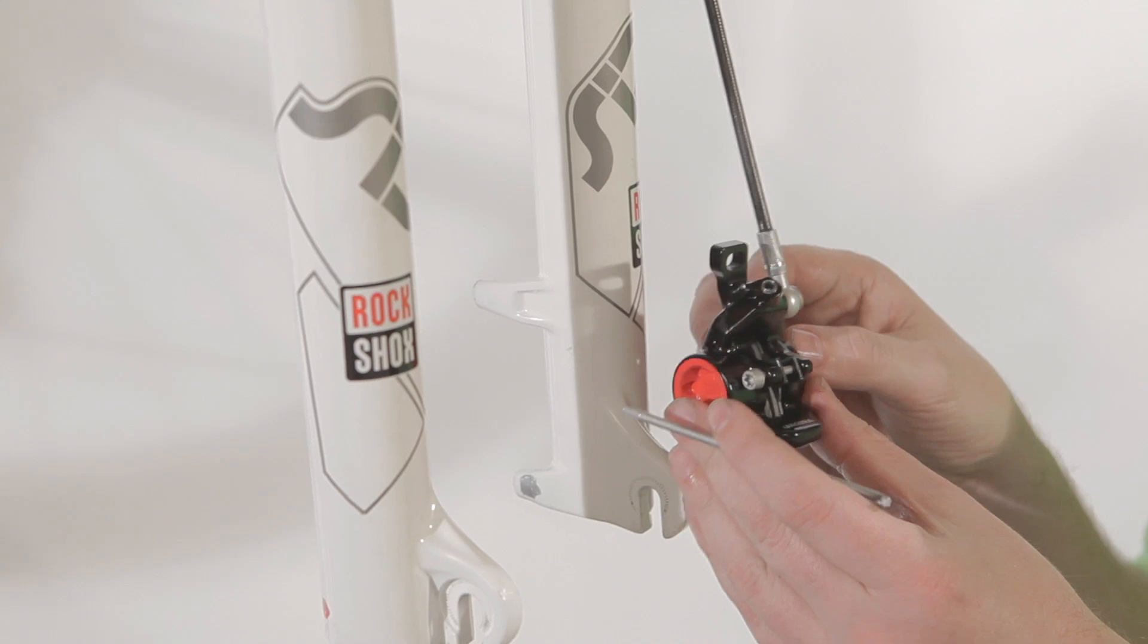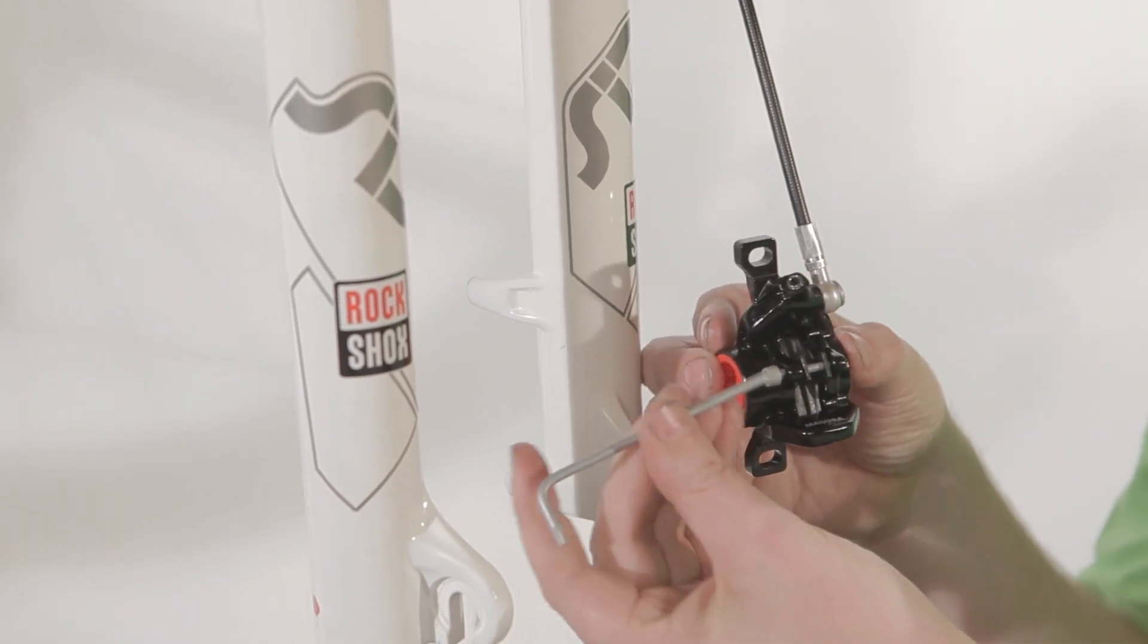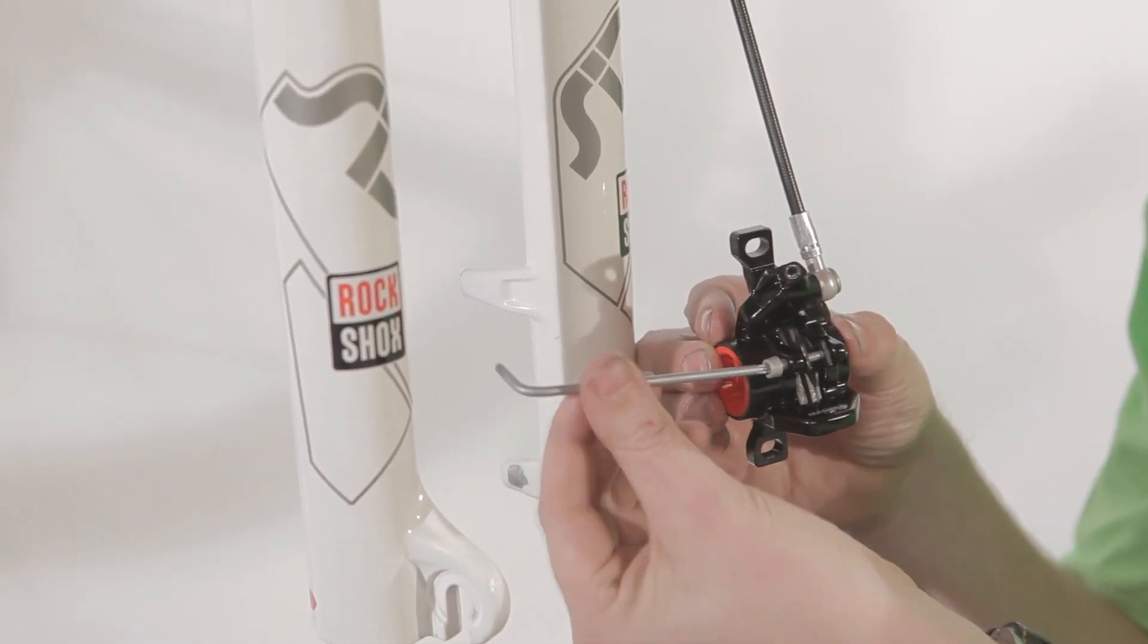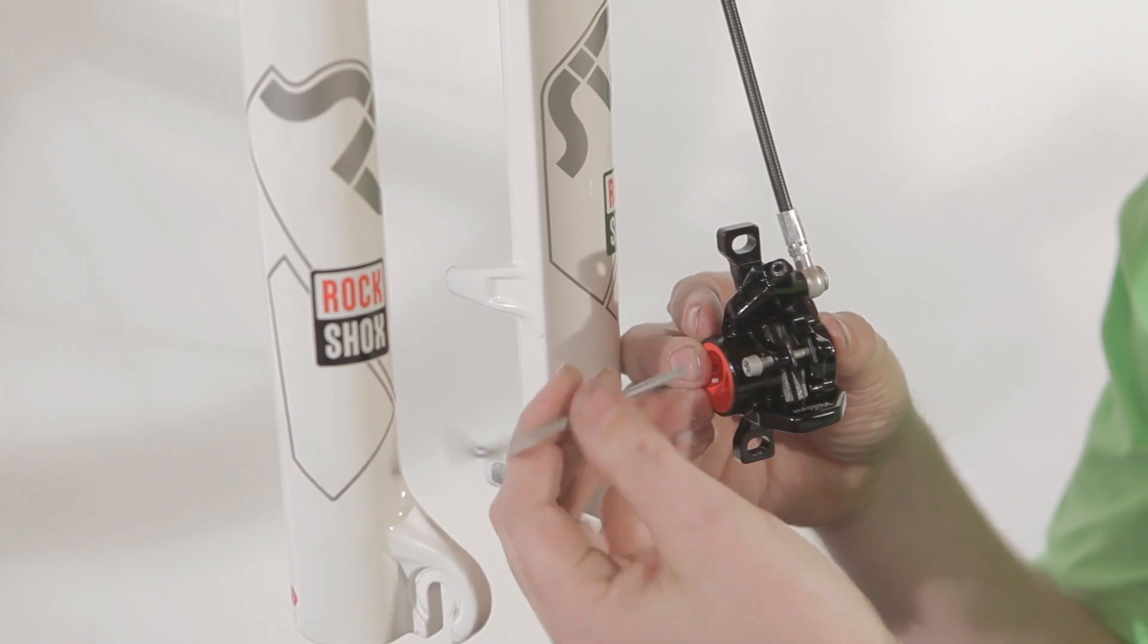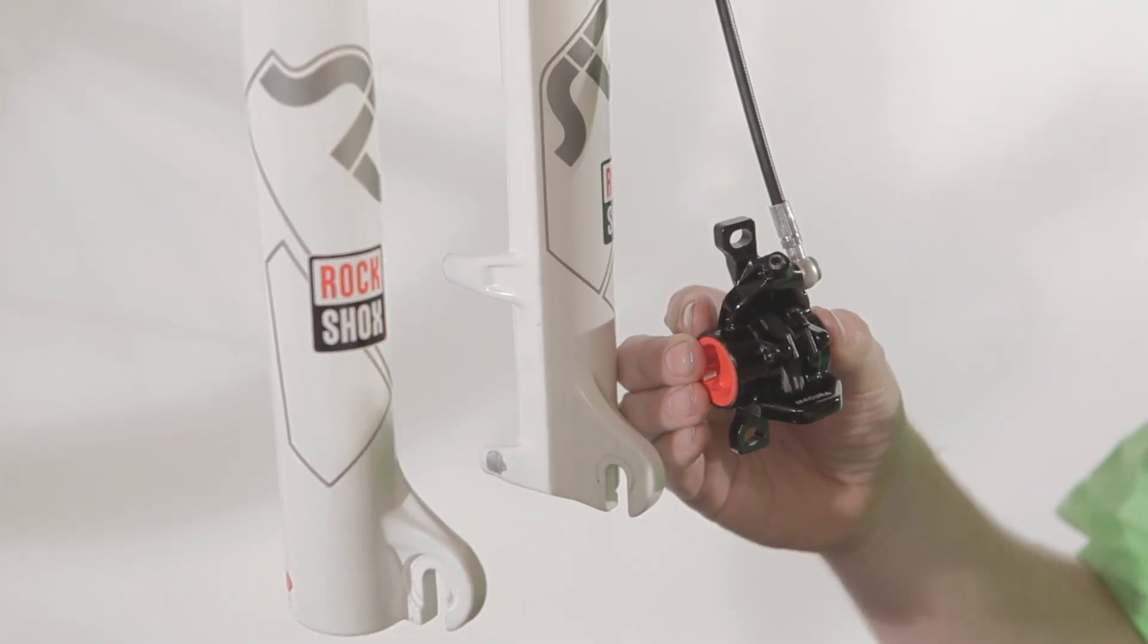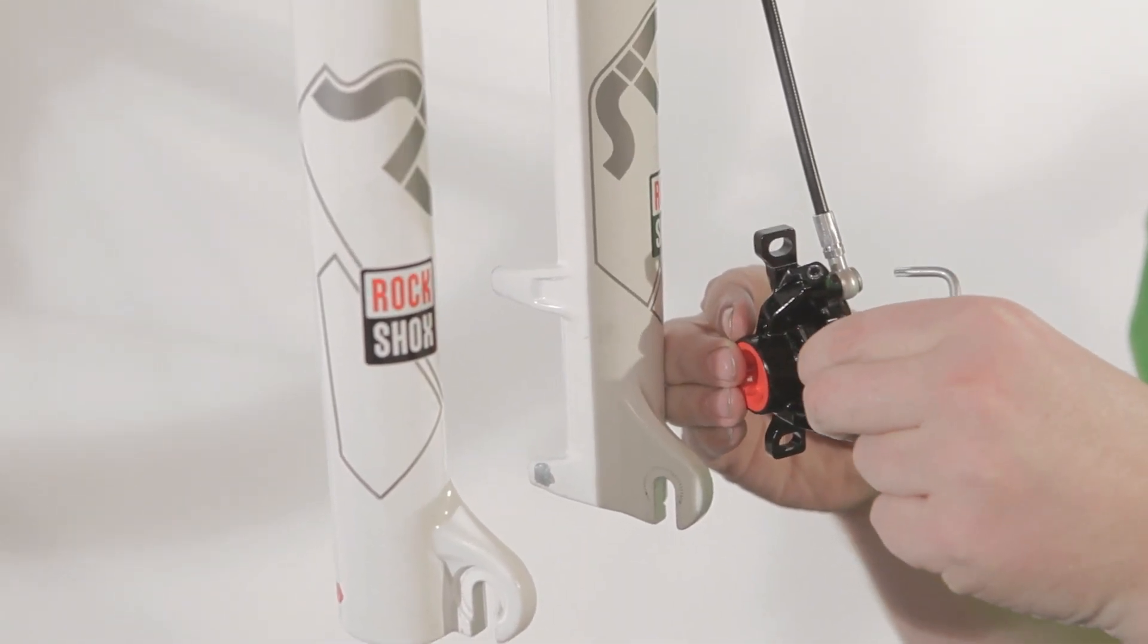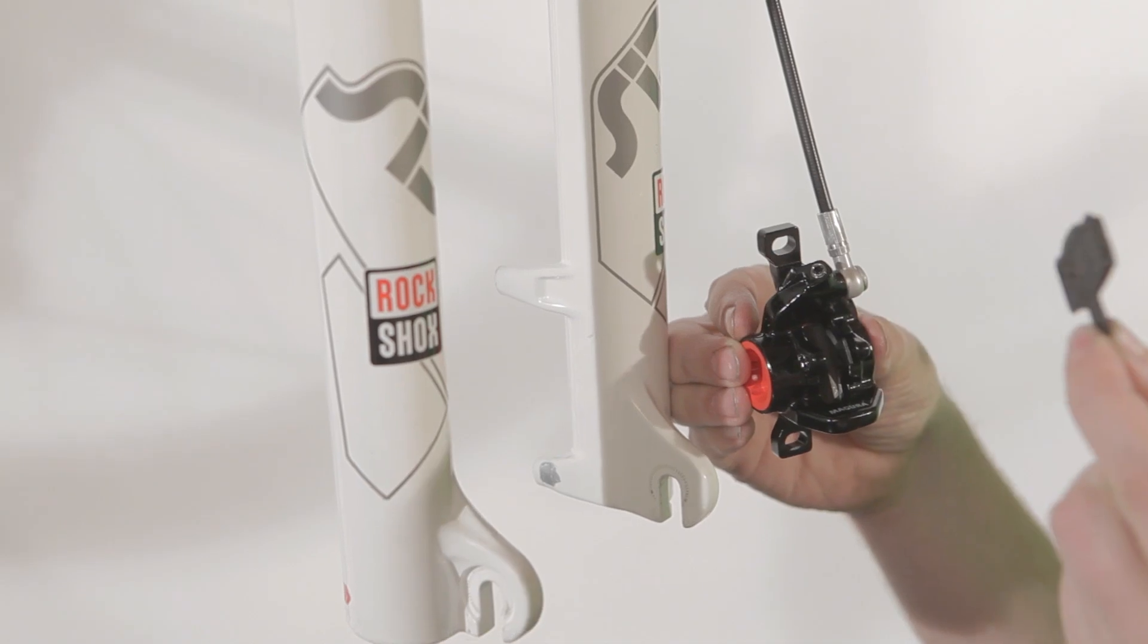Next step, we're going to remove the brake pads. In order to do so, you loosen up this bolt. Take it out and let the brake pads come out easily since they are magnetically attached.